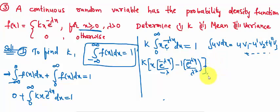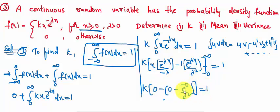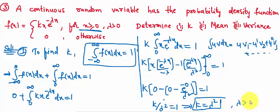Applying limits from 0 to infinity: at the upper limit, e^(-∞) = 0, so all terms involving e^(-λx) at infinity go to 0. At the lower limit, 0 into something is 0, and −e^(0)/λ² gives −1/λ². With the negative signs, we get k/λ² = 1, therefore k = λ², where λ > 0.